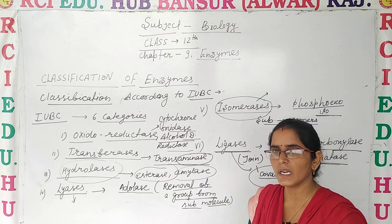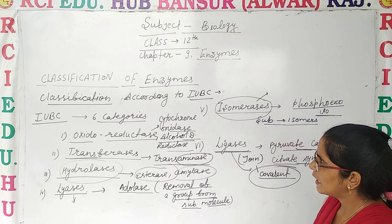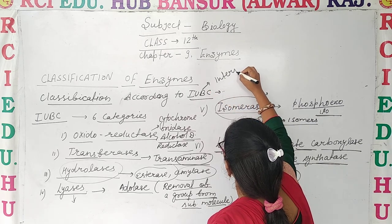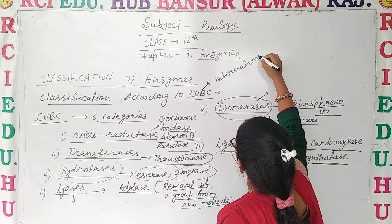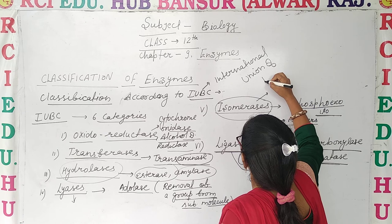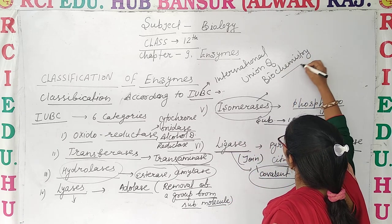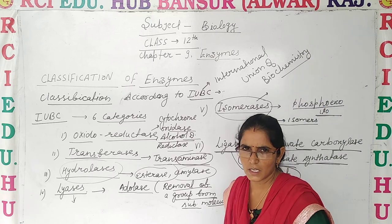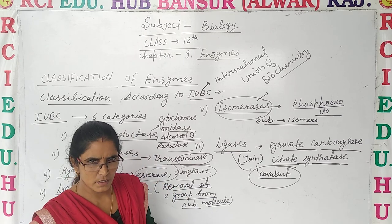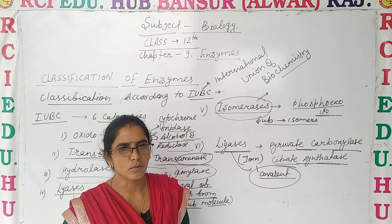To summarize: Lyases remove and break down, while Ligases join. These are the 6 major categories according to the International Union of Biochemistry (IUBC). I hope you are clear on the complete chapter on Enzymes. Please like, comment, share the video, and subscribe. Goodbye.